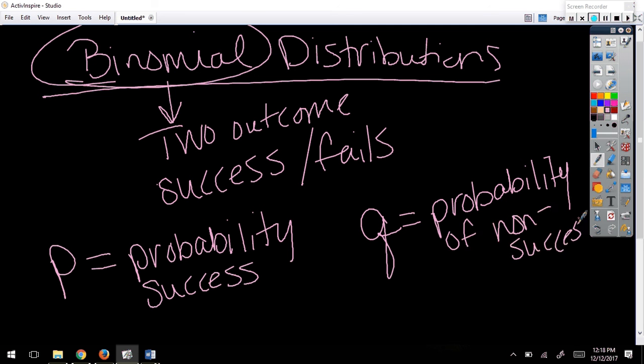If you have the probability of success, how would you find the probability of non-success? Subtracted from 100, it's got to add to 100, right? 100% or a 1. So this is 1 minus P. So if P is like 50, so 1 minus 50 would leave you what percentage? So the percentage of success and the percentage of failure is the same.